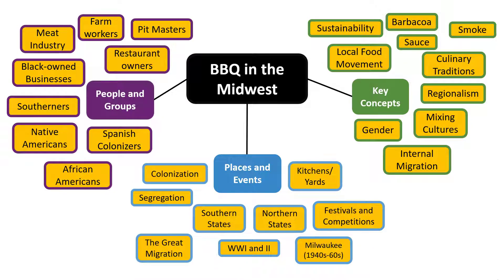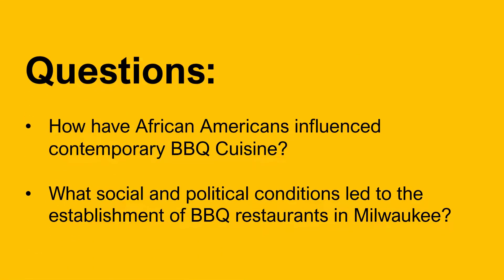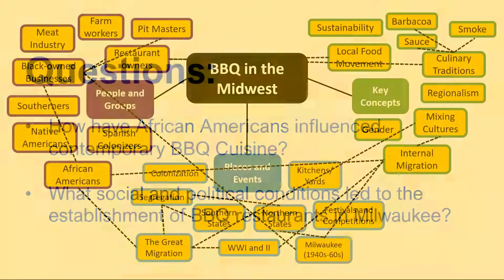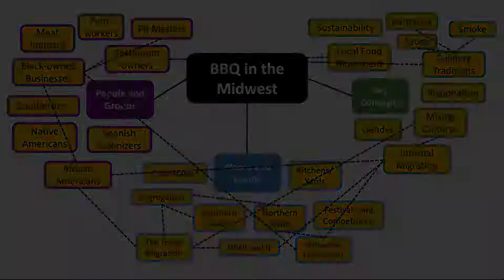In this example, mind mapping helped me move from the broad topic barbecue in the Midwest to the specific research questions: How have African Americans influenced contemporary barbecue cuisine? And what social and political conditions led to the establishment of barbecue restaurants in Milwaukee? Making my ideas visible through mind mapping helped me focus my personal curiosity into a college-level research topic.